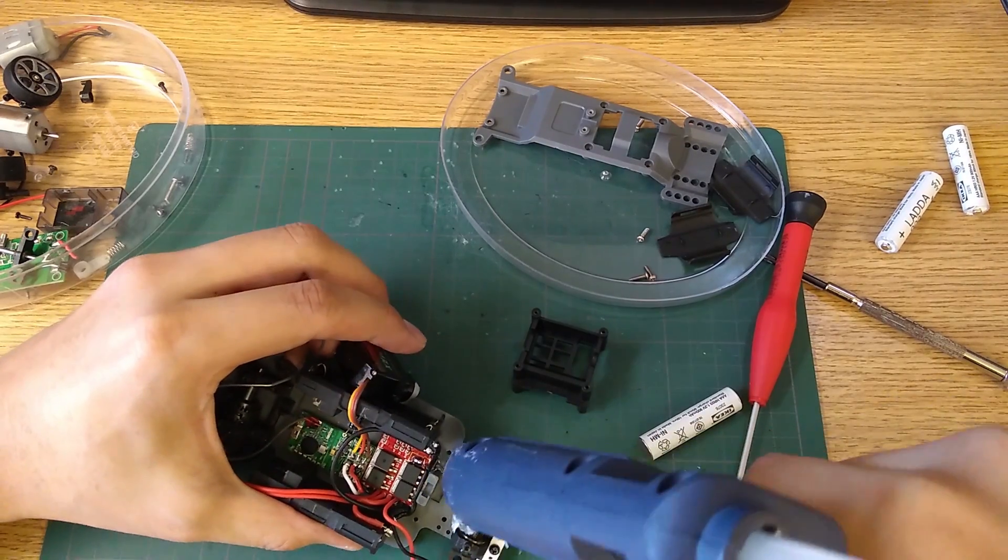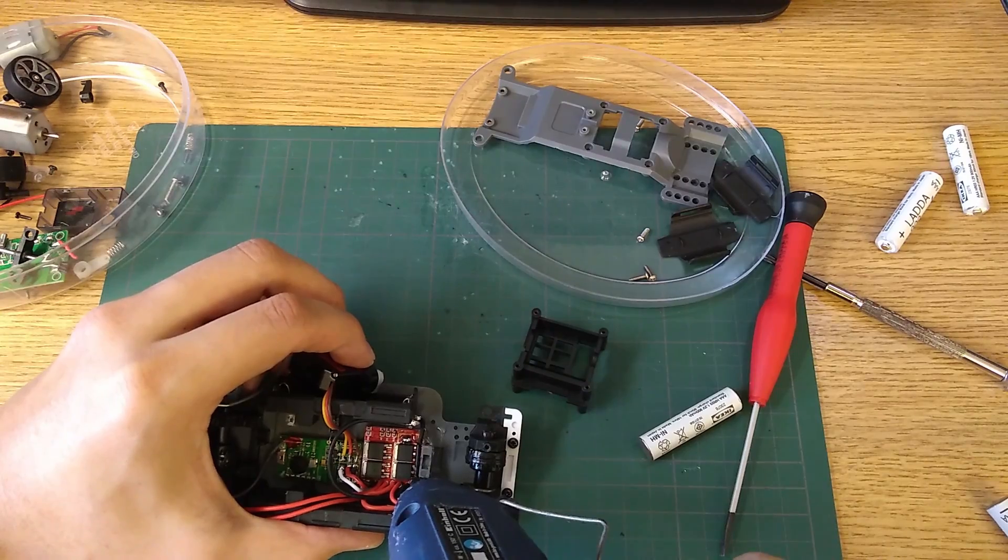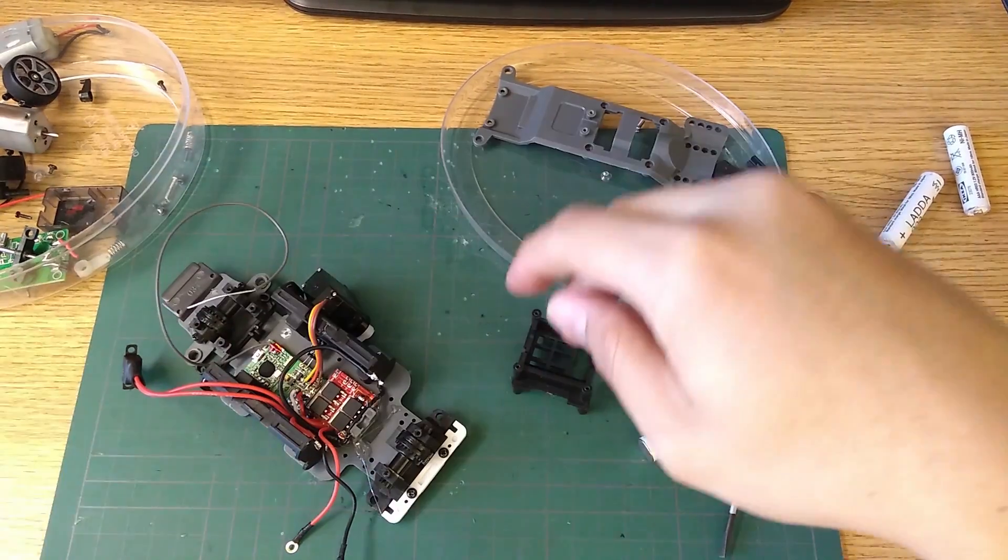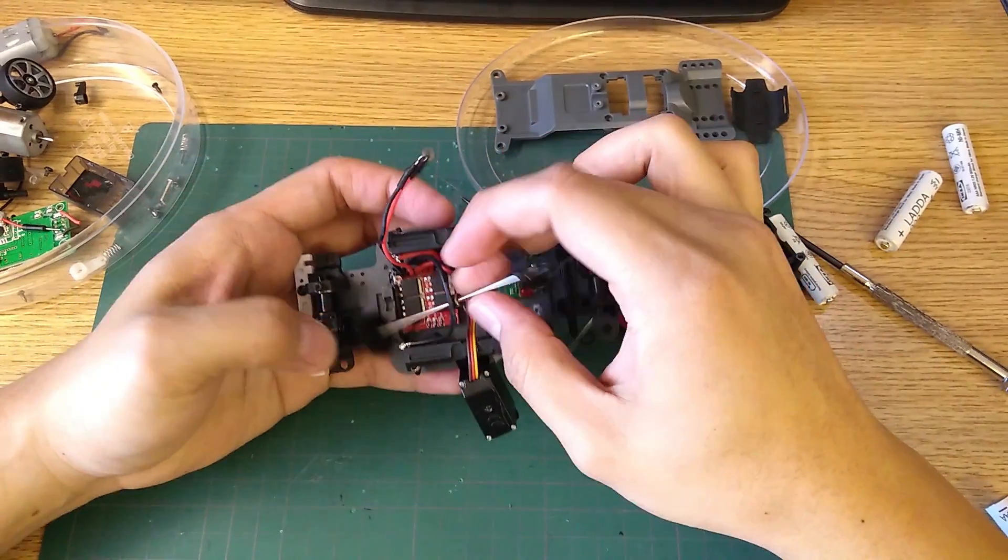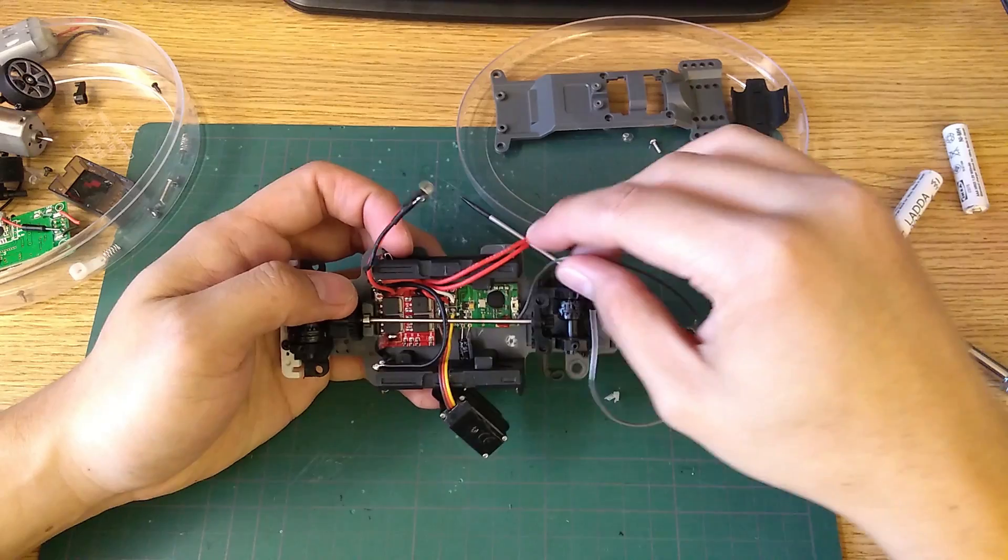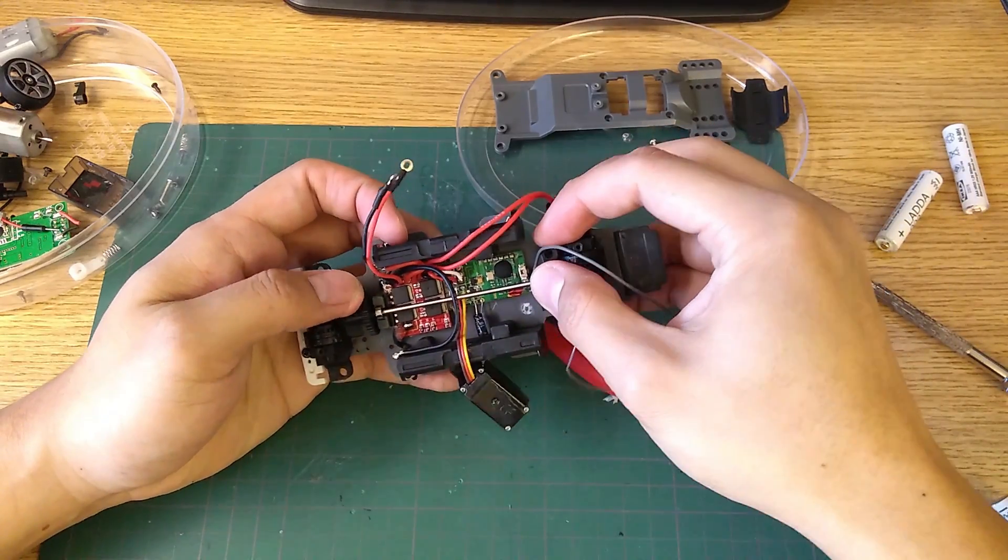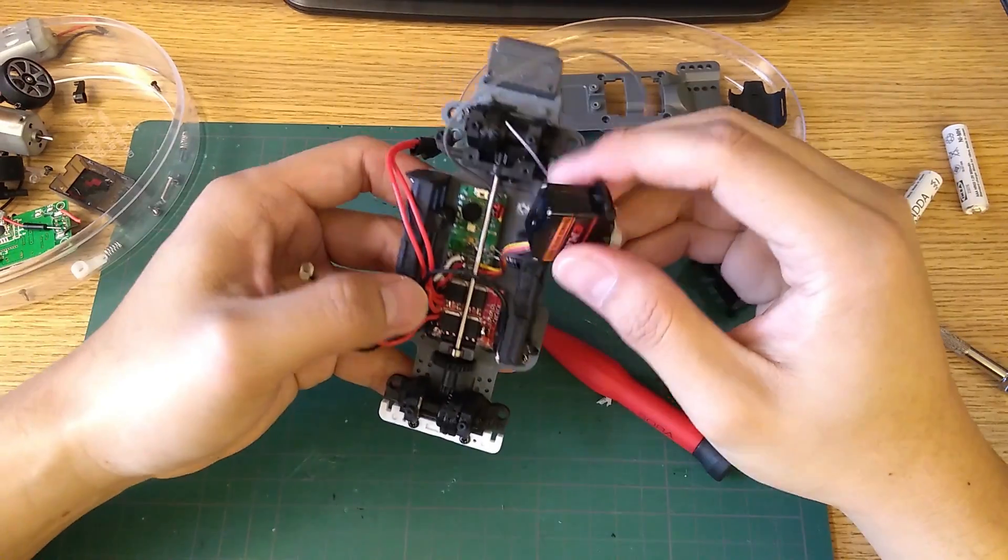I also use hot glue to hold down the wires that bridge between battery trays. Next one to go on is the centre shaft and then the servo.